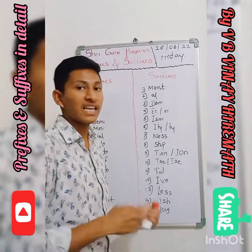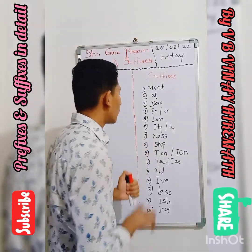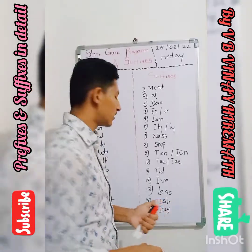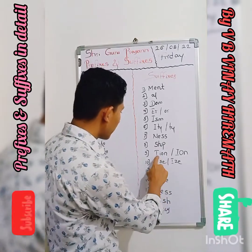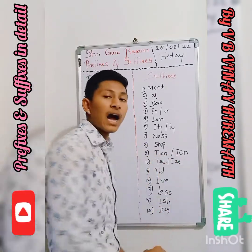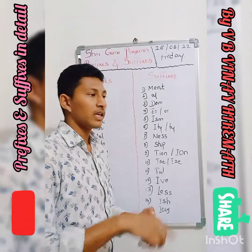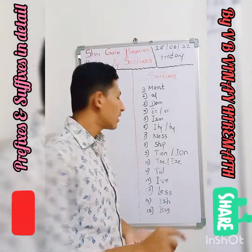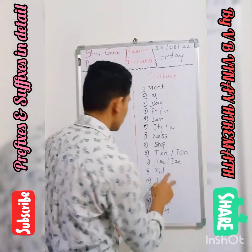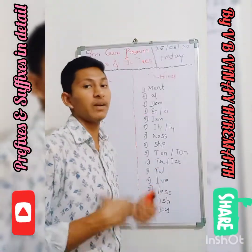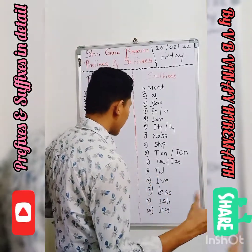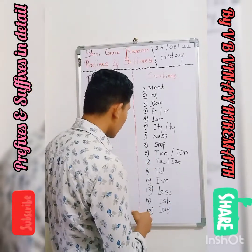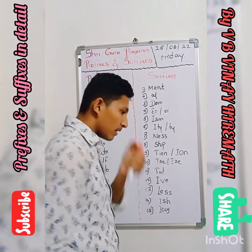The suffix '-ness': happiness, sadness, fullness. The suffix '-ship': friendship, relationship, worship. The suffix '-tion' (T-I-O-N): integration, nation — words ending in T-I-O-N are also called suffixes. The suffix '-ize' (I-Z-E): realized, materialized. The suffix '-ful': skillful, knowledgeful, powerful. The suffix '-ive' or '-tive': collective, competitive, creative.